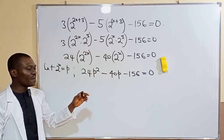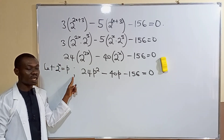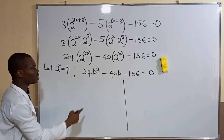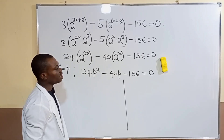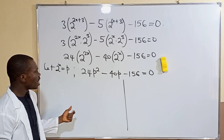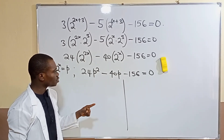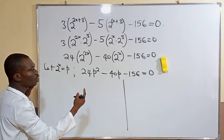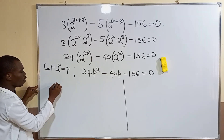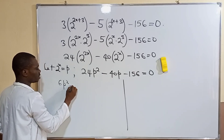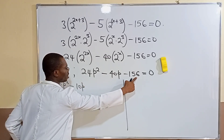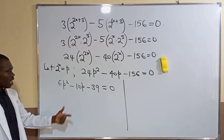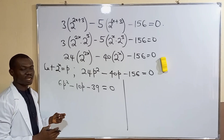Now we solve the quadratic equation. Remember, we are looking for x, not p, so we will substitute back later. First, we check for a common factor: 4 divides through. Dividing by 4 gives us 6p squared minus 10p minus 39 equals zero.